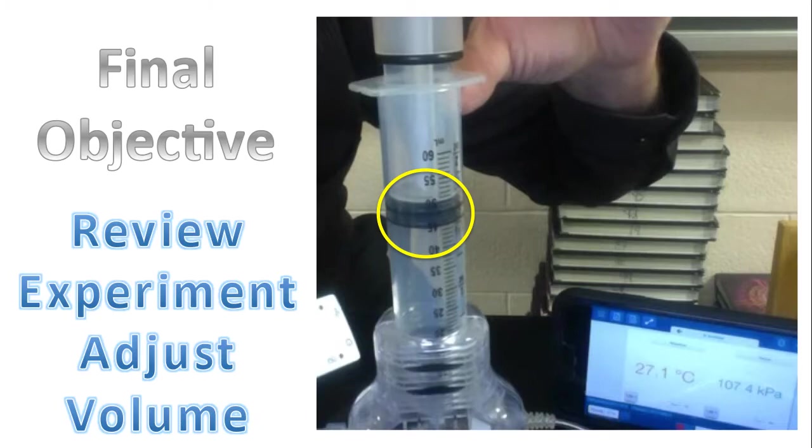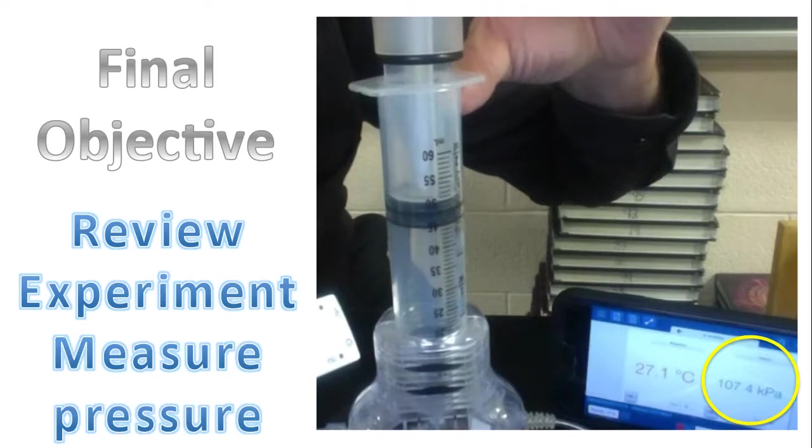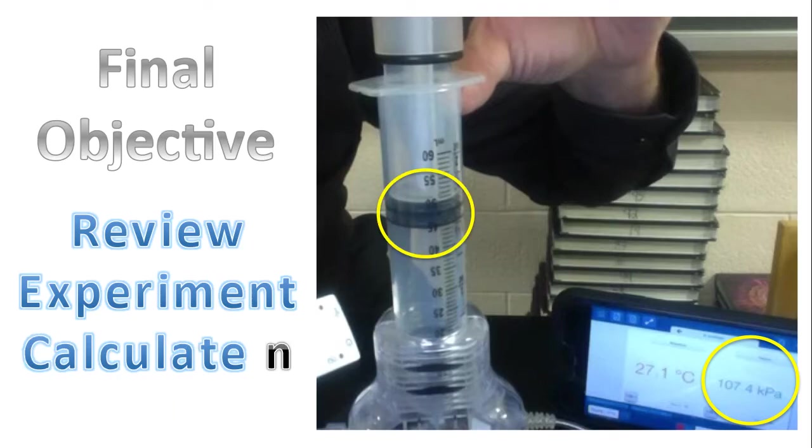As mentioned previously, we'll be adjusting the volume by pushing down on the piston, and we'll be measuring pressure. Ultimately, our goal will be to calculate the number of moles of gas that are in the cylinder.